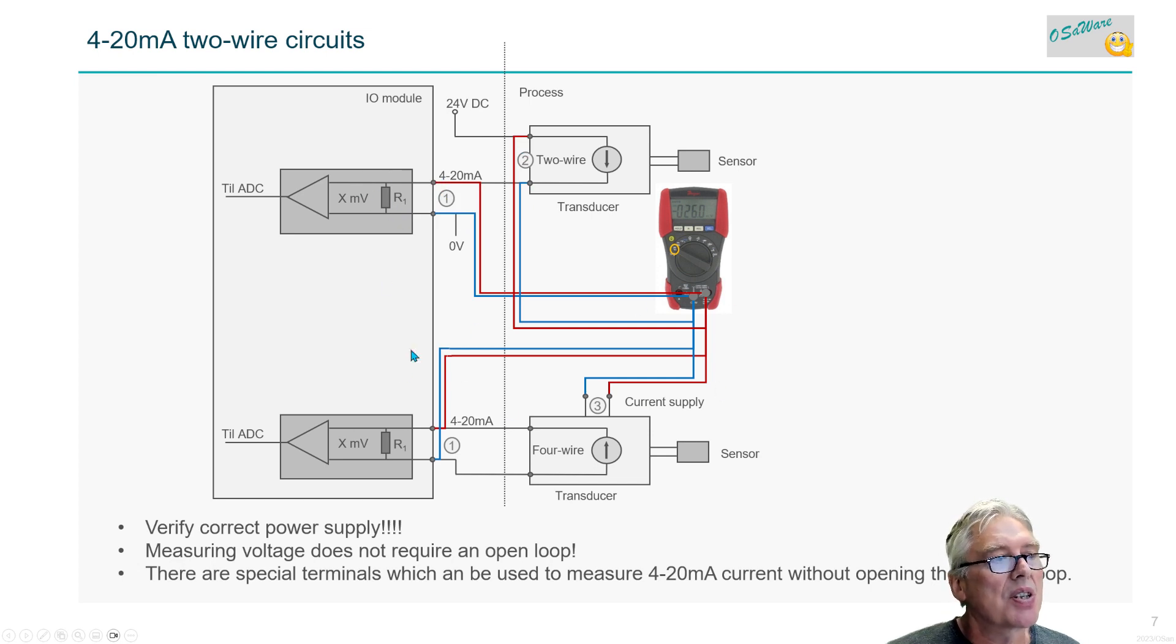You can use the same for a four-wire. First thing you do is measure the power supply. There exist special terminals where you can measure 4-20 milliamps using voltage and you get a reading also 4-20 milliamps, so you can read the signal itself without breaking the circuit, which is kind of nice.